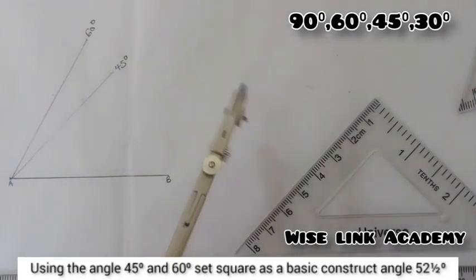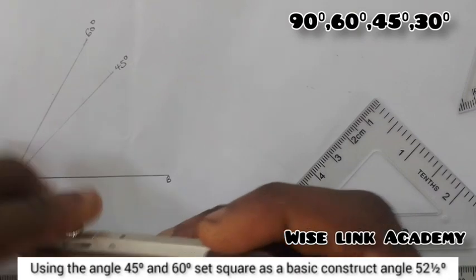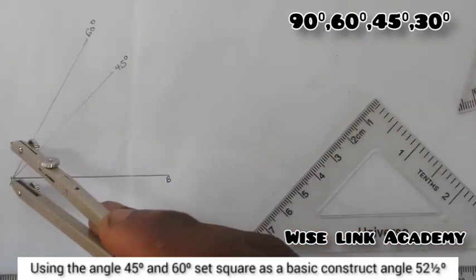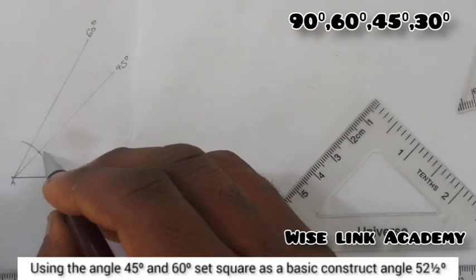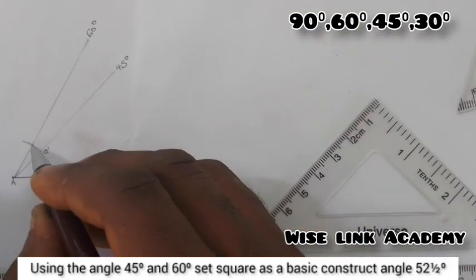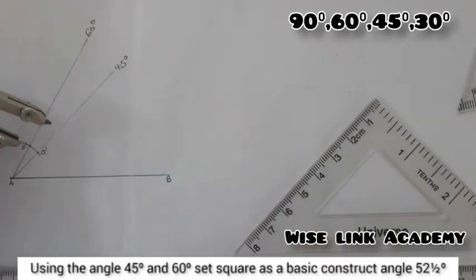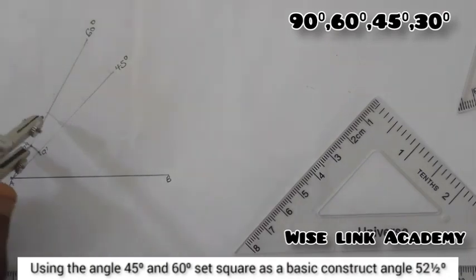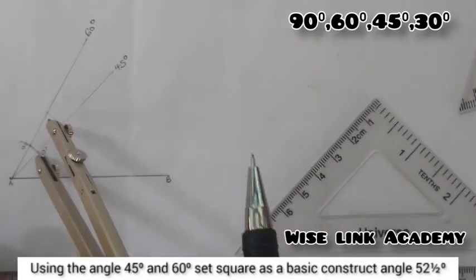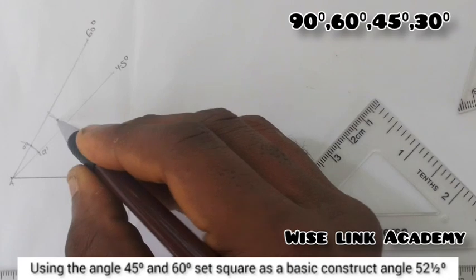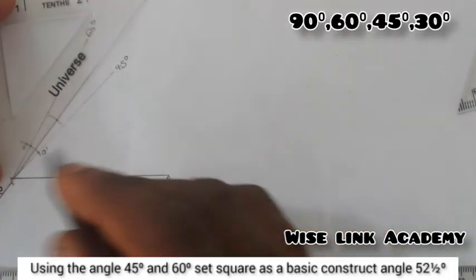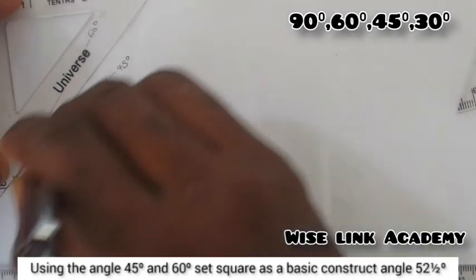So I need to bisect these two angles here with my compass. So I'll take my compass. At this point, any radius of your choice, come to this point A. Strike an arc here. Just cut an arc this way. So come to this point. Let's call this point my point A'. So come to A', strike an arc this way. And then come to A', cut the arc.